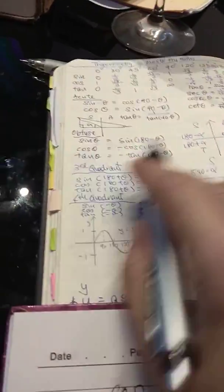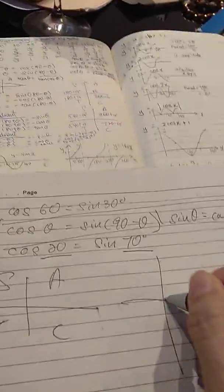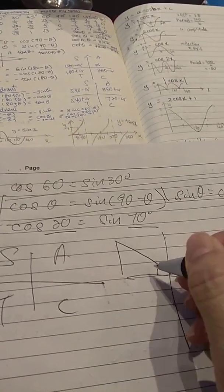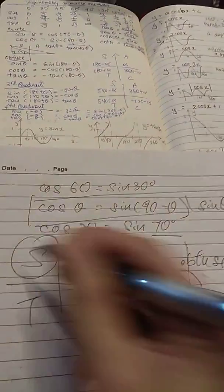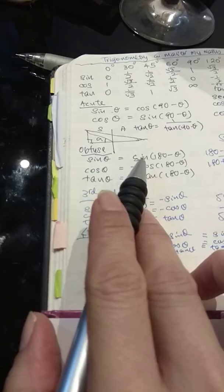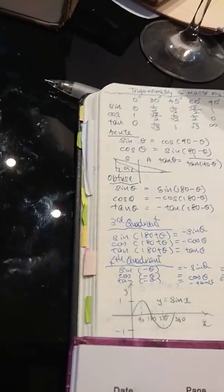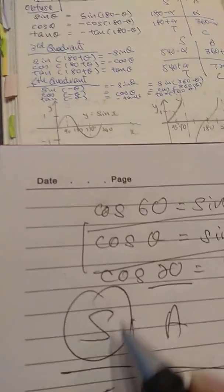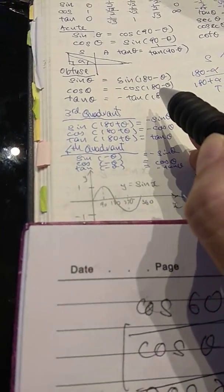If you look at this one, we are talking about the obtuse angle. Obtuse means that in the ASTC, we are referring to this is the basic angle, we are referring to this angle. So this is obtuse, it's under here. So we have these three formulas. Sine theta is equal to sine 180 minus theta. Now this is positive because it's in the second quadrant, so sine is positive. Whereas for cos theta, it's equal to minus cos 180 minus theta.